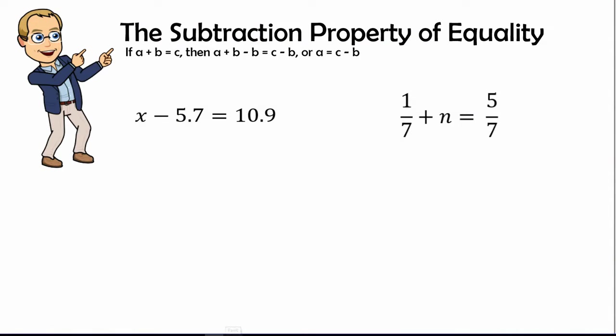In part two of learning about one-step equations and the subtraction property of equality, we will look at equations that have decimals and fractions involved. In this first equation, we have x minus 5.7 equals 10.9.